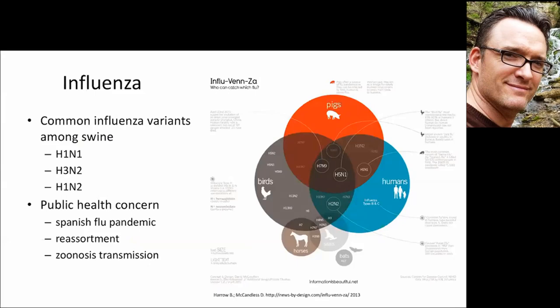Historically, we've had an example of the pandemic — the Spanish flu pandemic from 1918. One of the hypotheses is that this Spanish flu was a result of a combination of bird flu and swine flu, and perhaps originated in the Midwest. It's a real concern, and of course resulted from zoonotic transmission from animals to people.